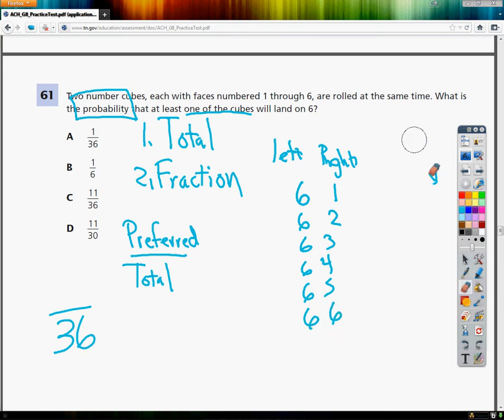Similarly, what if the one on the right is always 6? So I could roll the left one being 1, and the right one being 6, the left could be 2, the left could be 3, the left could be 4, or the left could be 5. All those are possibilities.